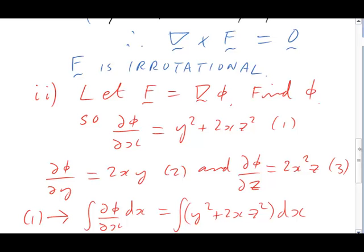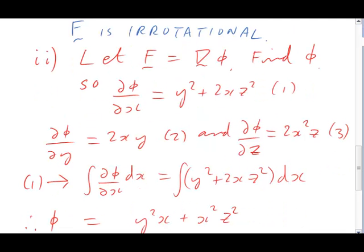So we get the integral ∂phi/∂x dx equals the integral (y² + 2xz²)dx. On the left-hand side, the integral of ∂phi/∂x with respect to x is just phi. On the right-hand side, y and z can be regarded as constants, so the only serious integration is the 2x bit, which becomes x². There's our phi. Is that the answer? Well, careful!